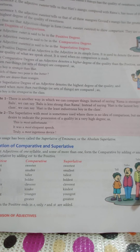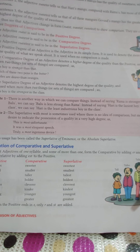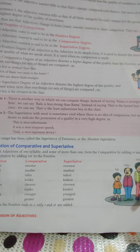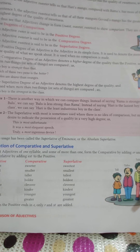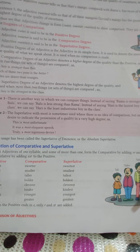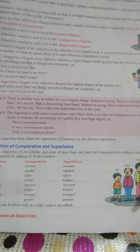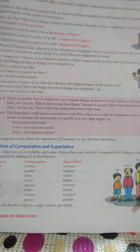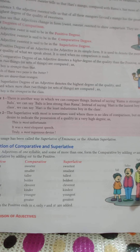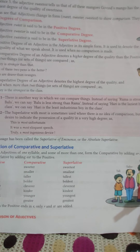The positive degree of an adjective is the adjective in its simple form. It is used to denote the mere existence of some quality, and it is used when no comparison is made.